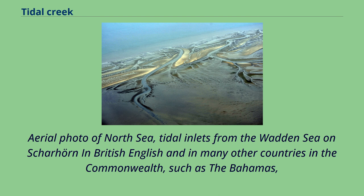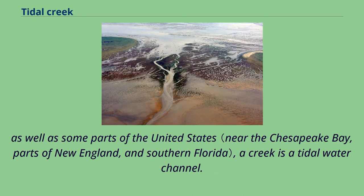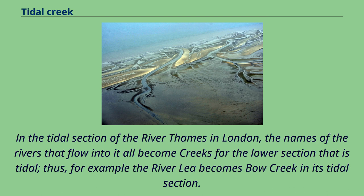Tidal inlets from the Wadden Sea on Skorhorn — in British English and in many other countries in the Commonwealth, such as the Bahamas, as well as some parts of the United States, a creek is a tidal water channel. In the tidal section of the River Thames in London, the names of the rivers that flow into it all become creeks for the lower section that is tidal. Thus, for example, the River Lee becomes Bow Creek in its tidal section.